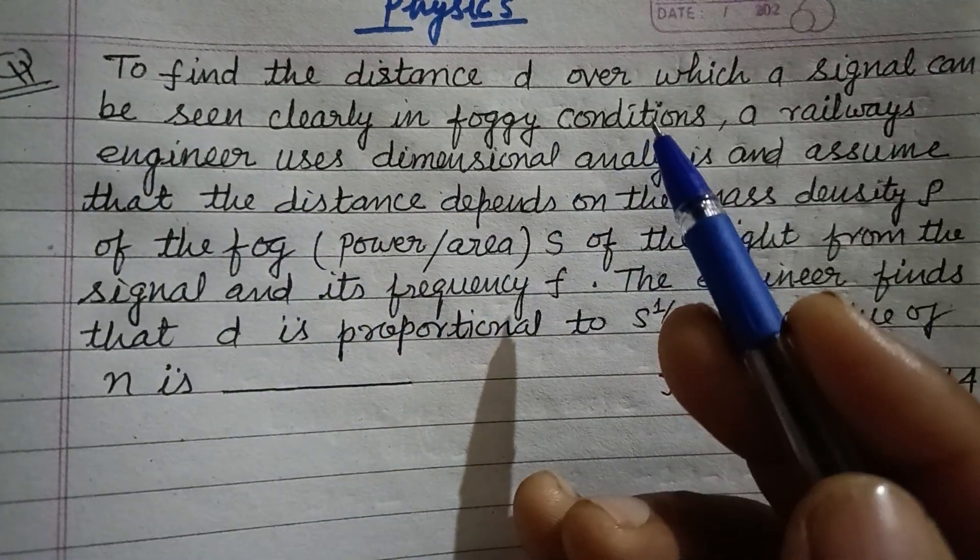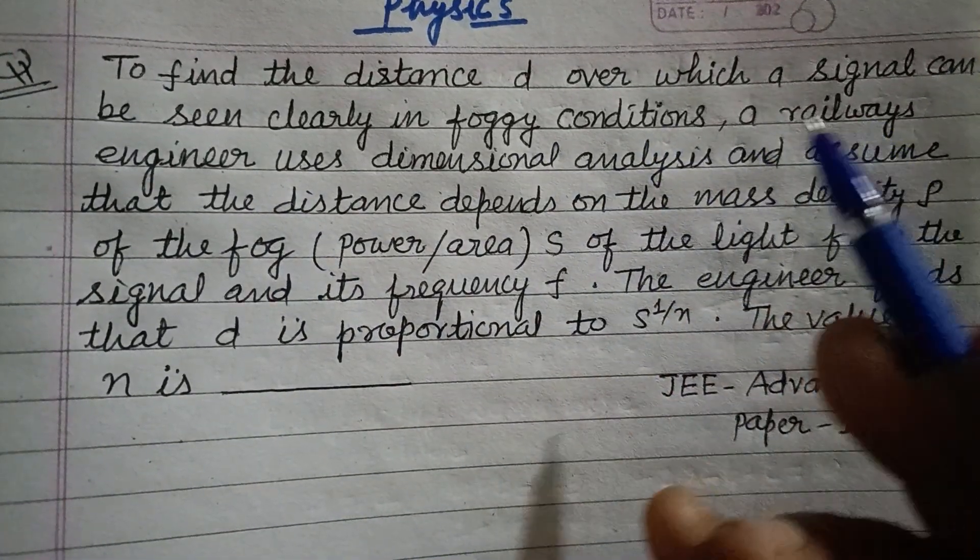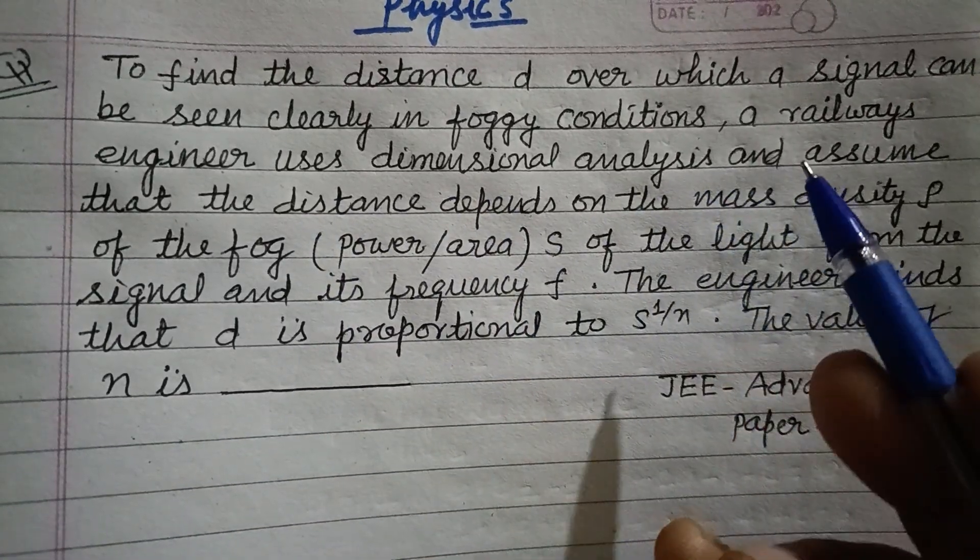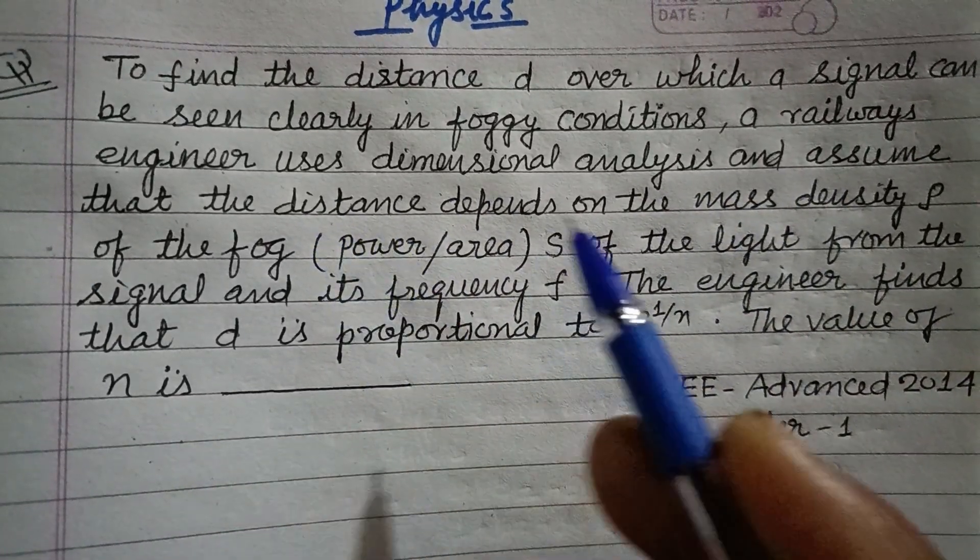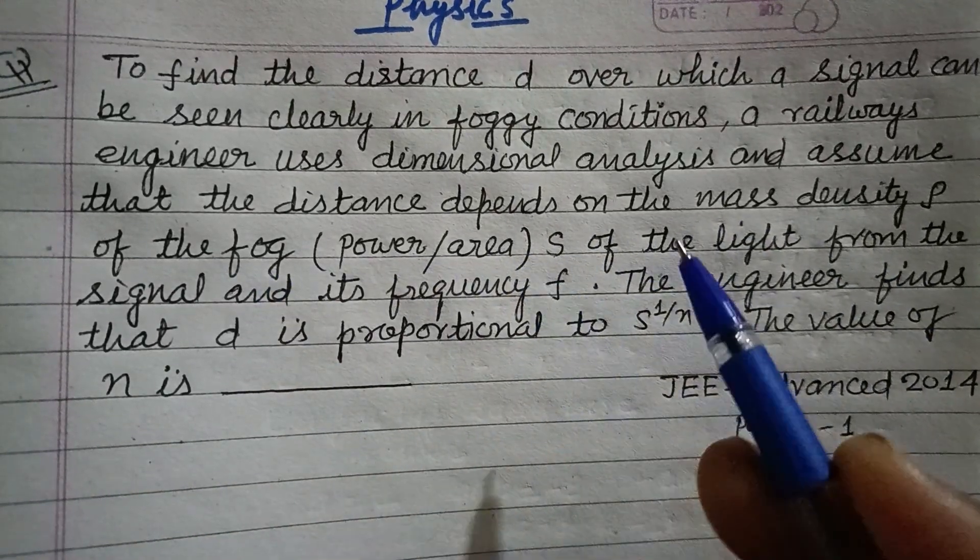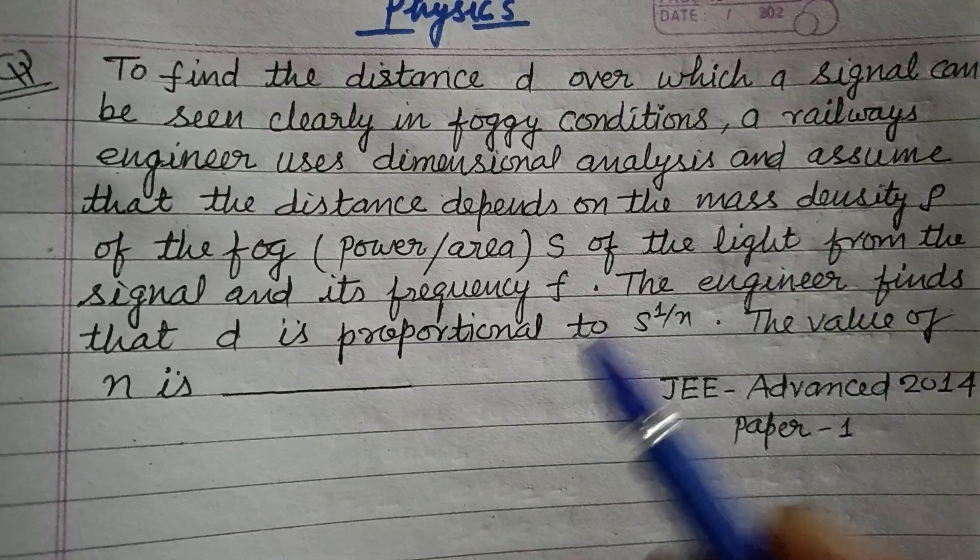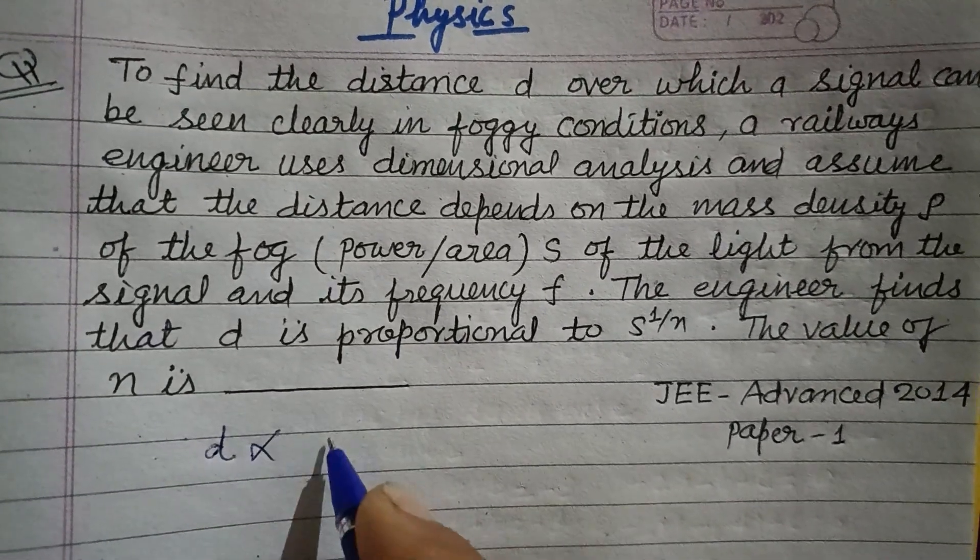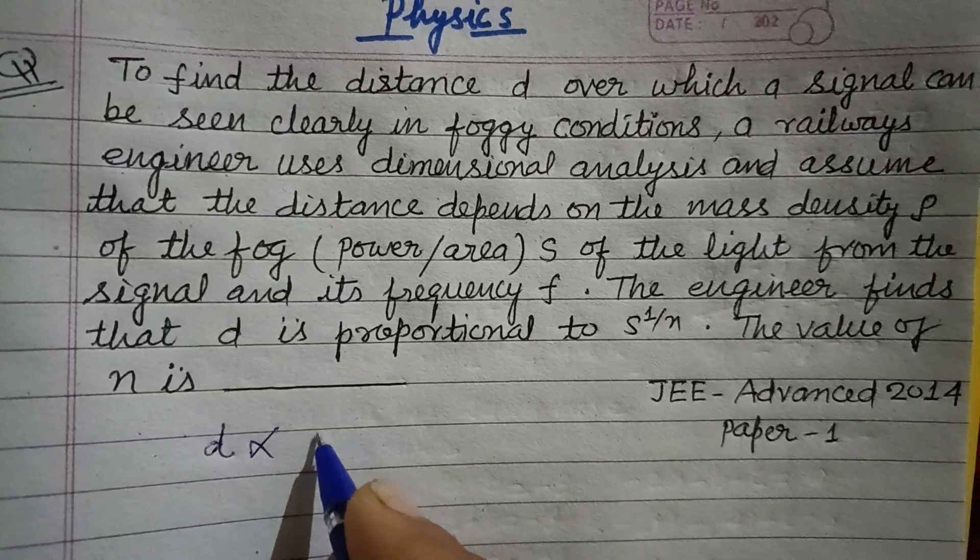To find the distance d over which a signal can be seen clearly in foggy conditions, a railway engineer uses dimensional analysis and assumes that the distance depends on the mass density. Here, distance d depends on mass density which is rho.